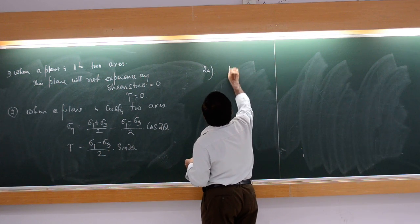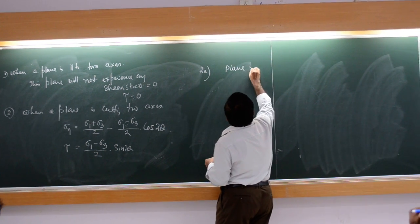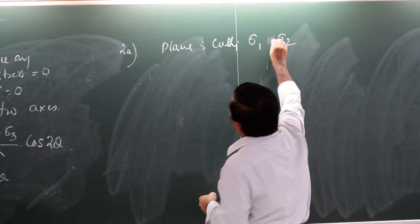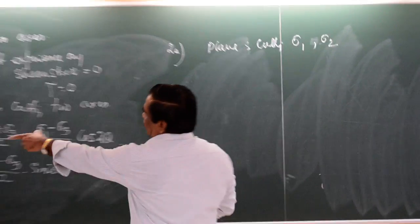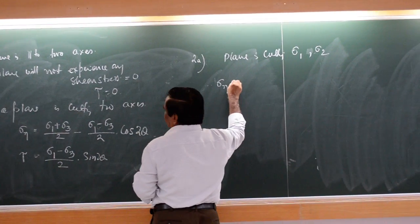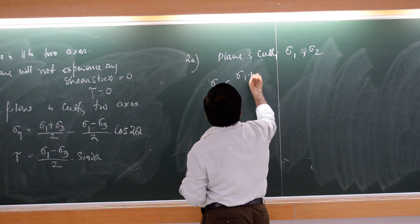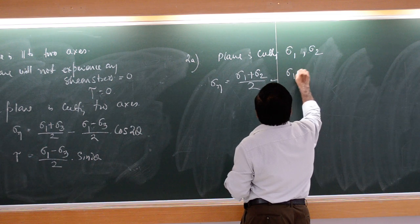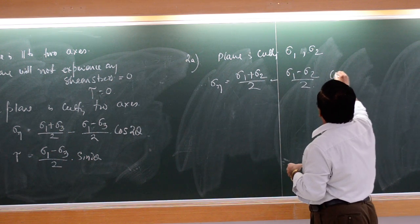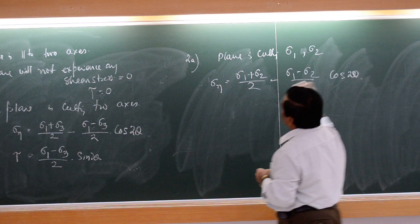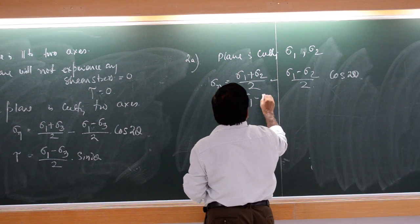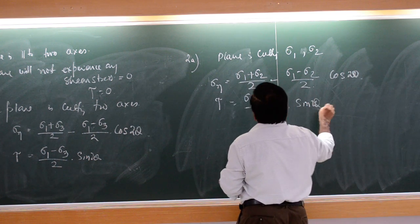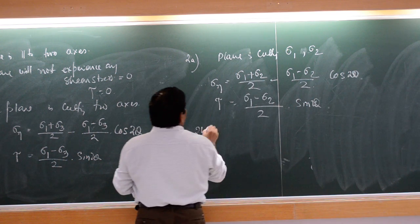If the plane is cutting sigma 1 and sigma 2, the formula is fully modified: sigma_n = (sigma 1 + sigma 2)/2 minus (sigma 1 minus sigma 2)/2 times cos 2-theta, and tau = (sigma 1 minus sigma 2)/2 times sin 2-theta. Similarly, for the 2B case it will be modified accordingly.